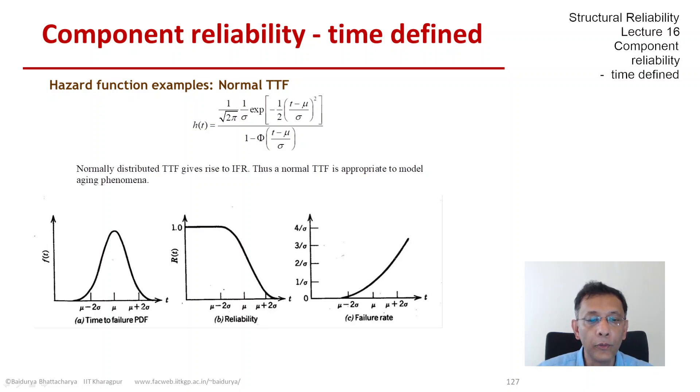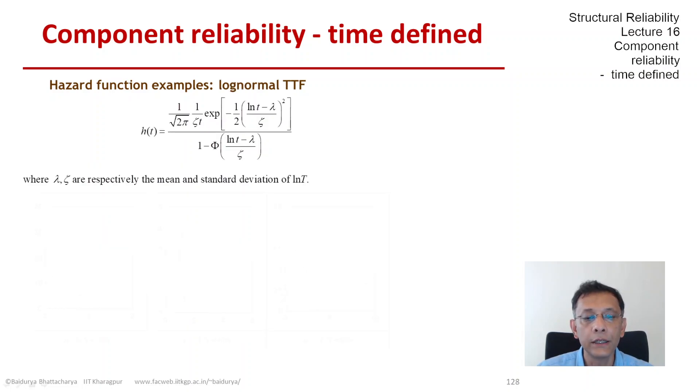Now, all the objections related to possible negative values for normal are eliminated when we have a lognormal time to failure. So the lognormal distribution is defined only for non-negative values. So here, we have the hazard function defined as a PDF over 1 minus CDF as before.